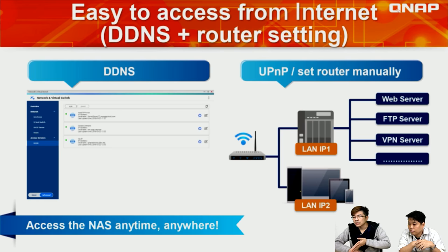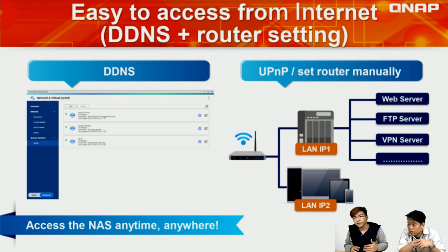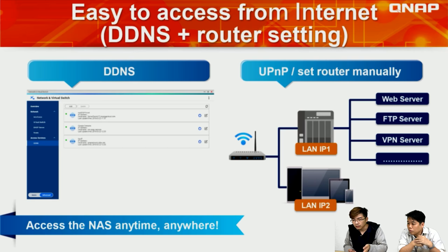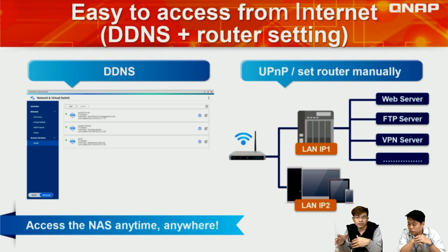It's now very easy to access from the internet because myQNAPcloud has an auto port-forwarding or auto load configuration function. If your router has UPnP, it will help set up port forwarding for each of your services — FTP, web server, VPN, and more. You can now configure all of this directly in the Network and Virtual Switch tab within the control panel, making internet configuration much more centralized and convenient.